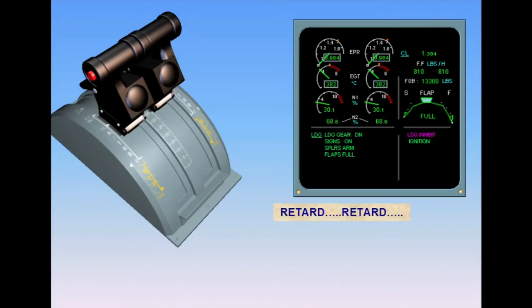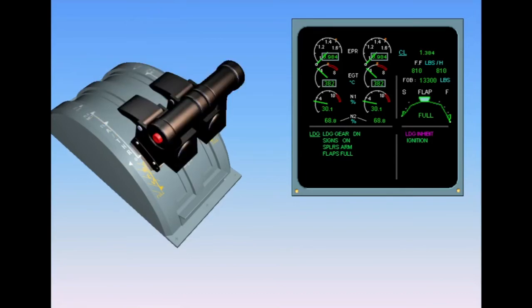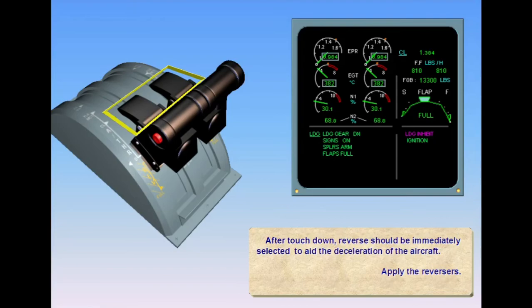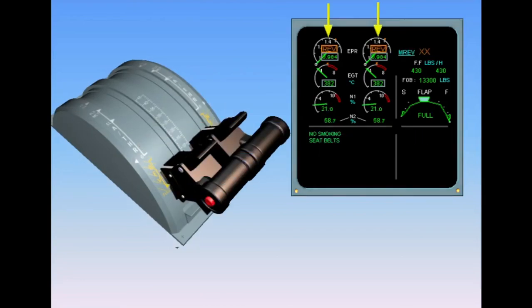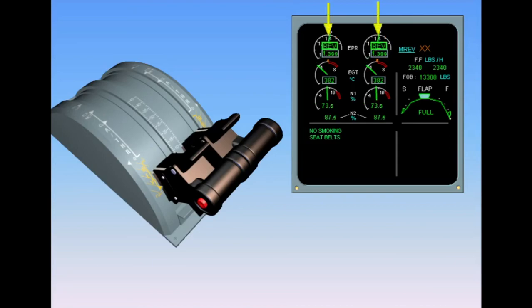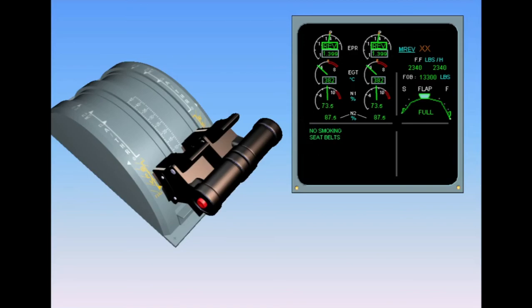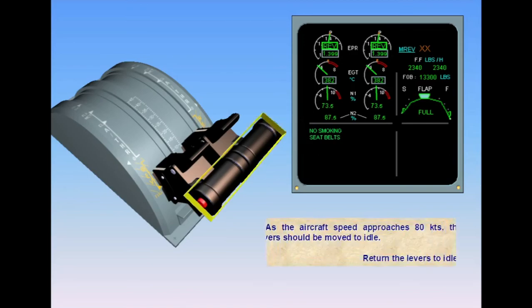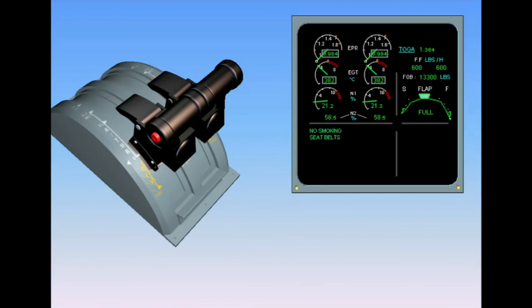There is an audio callout to advise the pilot to select the idle position. After touchdown, reverse should be immediately selected to aid the deceleration of the aircraft. On the EPR indicators, reverse appears in amber indicating that the reversers are unstowed and unlocked. When the reversers are fully deployed, the REV indication changes to green. As the aircraft speed approaches 80 knots, the levers should be moved to idle. To provide for sufficient cooldown, it is recommended to leave the engines running for at least 3 minutes after landing.